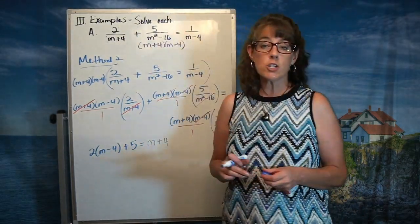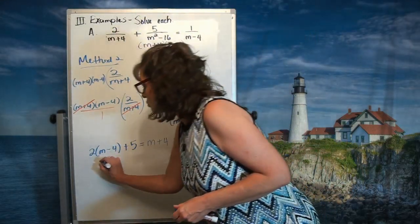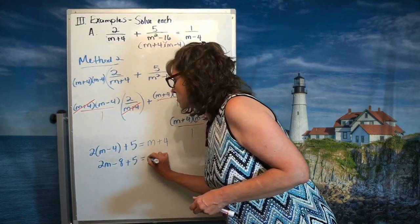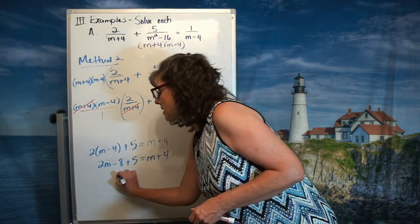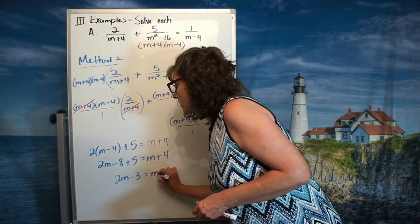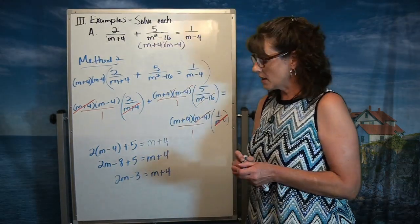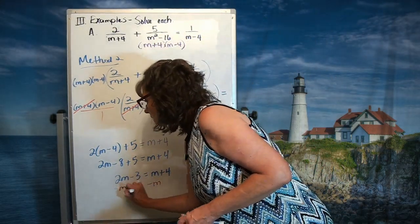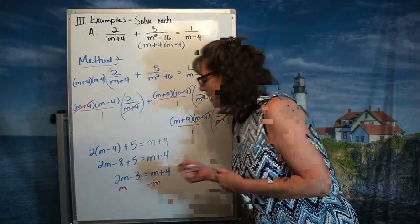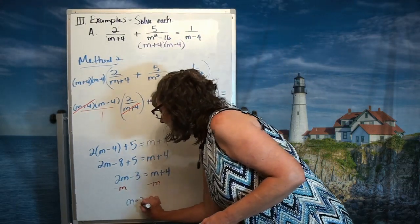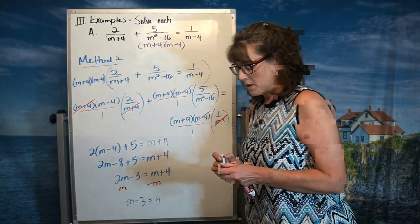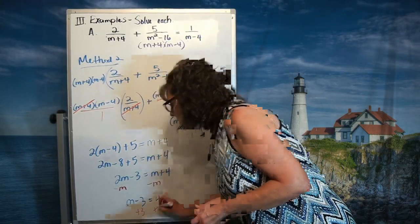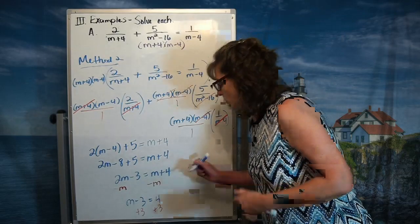That leaves an equation that's pretty easy to solve. I'm going to distribute, then combine like terms. And you'll notice the equation I'm getting is the same as before. Subtracting m gives m minus 3 equals 4. Adding 3 to both sides gives m equals 7 once again.